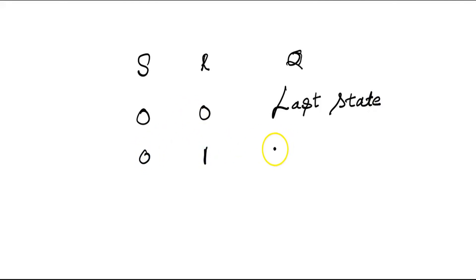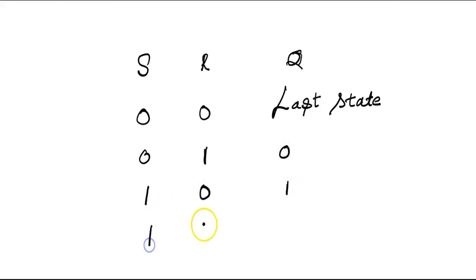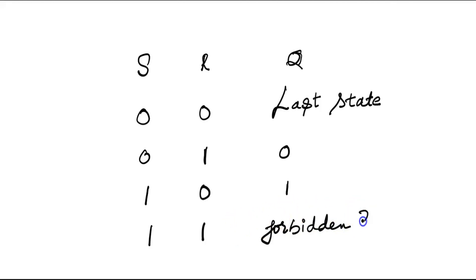To summarize the NAND-based SR latch: for inputs S = 0, R = 1, Q will be 0 always. For S = 1, R = 0, Q will be 1 always. For S = 1, R = 1, it is forbidden — not possible and should be avoided.